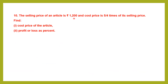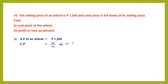Question 10. The selling price of an article is 1200 rupees and the cost price is 5 by 4 times its selling price. First we need to find the cost price. Cost price is 5 by 4 into 1200. Cancel: 4 threes are 12, leaving 300. 5 into 300 is 1500. So the cost price is 1500 rupees. That is the first answer.